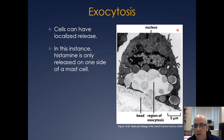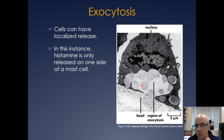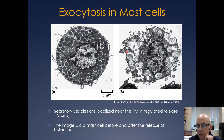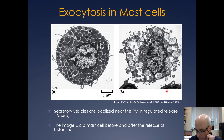The exocytosis can also be regulated in where it's released — it can be directional. Here you have another mast cell, and there's a bead that is basically catalyzing the release of the histamine, and it's only on this side — not on the other side. So you can see that not everything is fusing with the plasma membrane uniformly. It can be regulated and it can occur just on part of the cell.